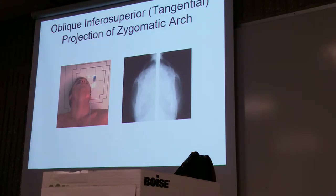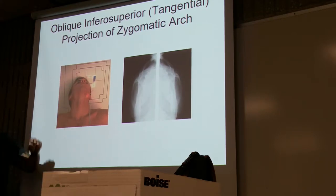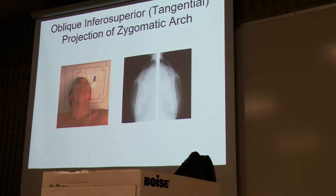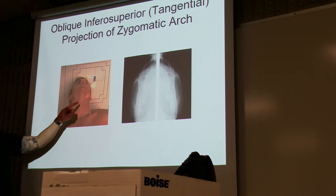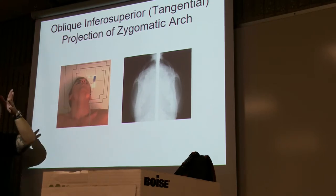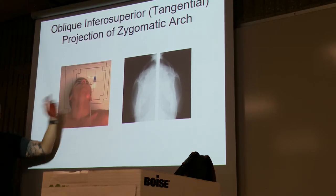So here's an example of an oblique, inferior-superior projection because we're going from bottom to top — inferior-superior projection — tangential because it's skimming the cheekbone. Why is it oblique? Because his head is slightly oblique to the side. So it's an oblique position, inferior-superior projection. If I want to be more specific, I'm skimming the body part, so it's a tangential projection.